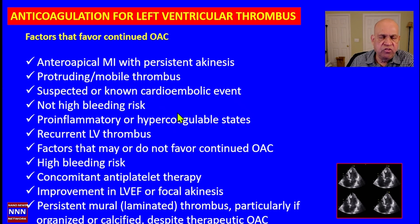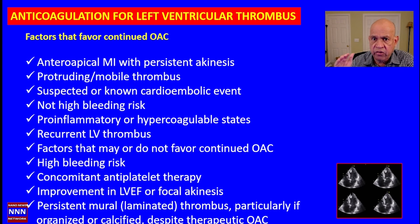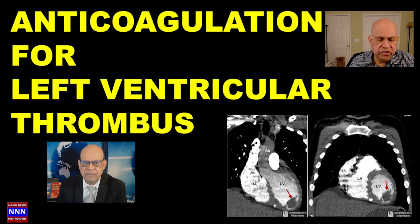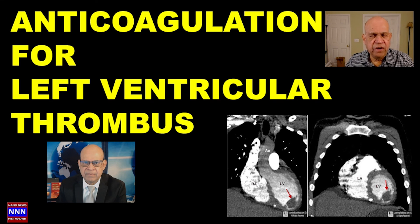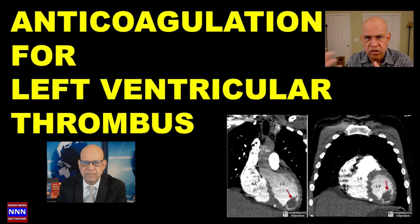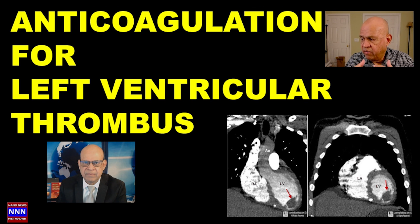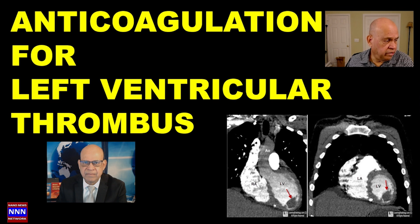These are the situations where we should consider the possibility of continuing anticoagulation on a long-term basis. In summary, this presentation covered anticoagulation for left ventricular thrombus: how to diagnose LV thrombus, how to define its characteristics, which patients are prone to developing ventricular thrombus, and how to decide on treating these patients with oral anticoagulant agents.